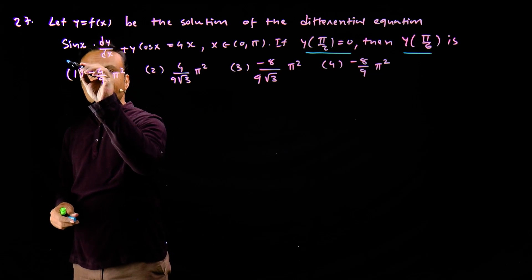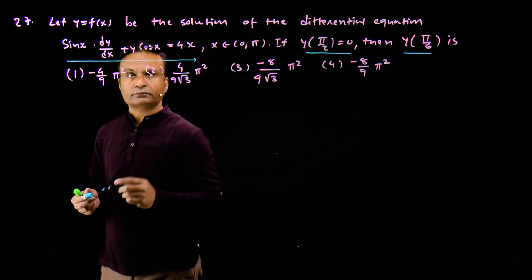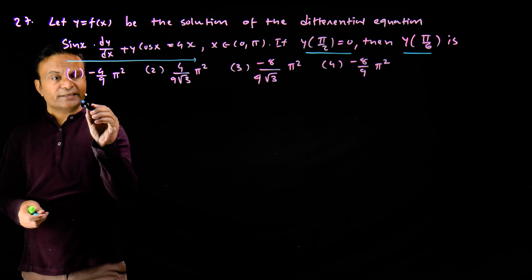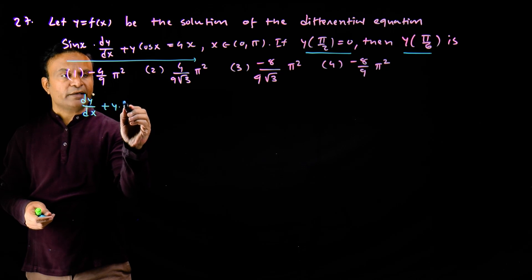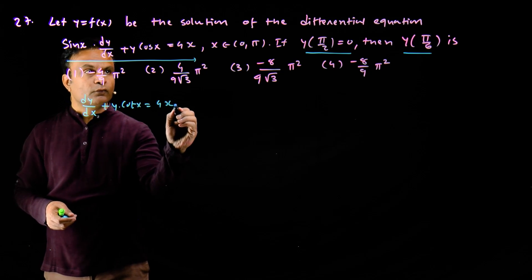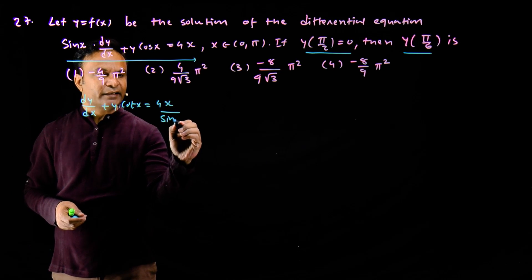What type of differential equation is this? If we divide the entire equation by sin x, the equation becomes dy by dx plus y multiply by cot x is equal to 4x upon sin x.